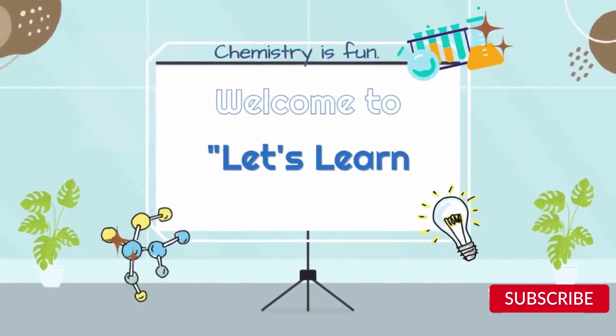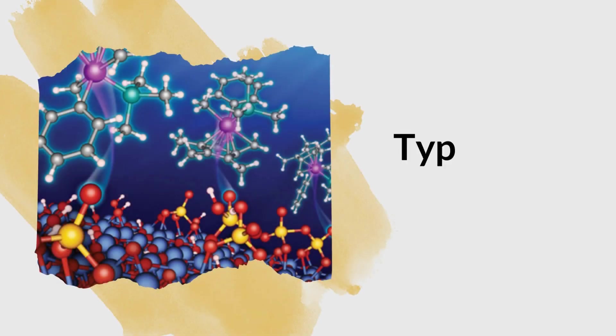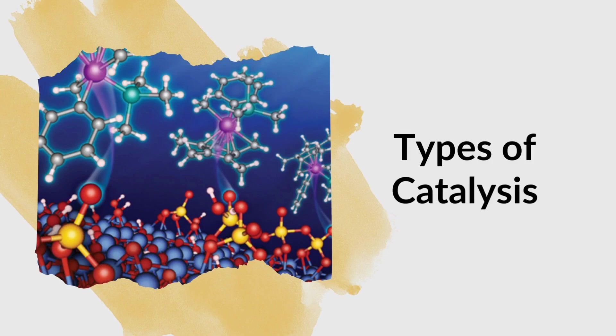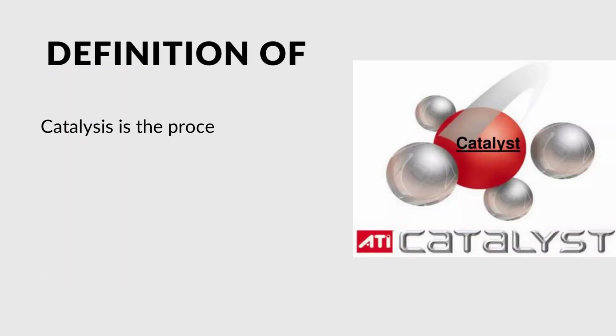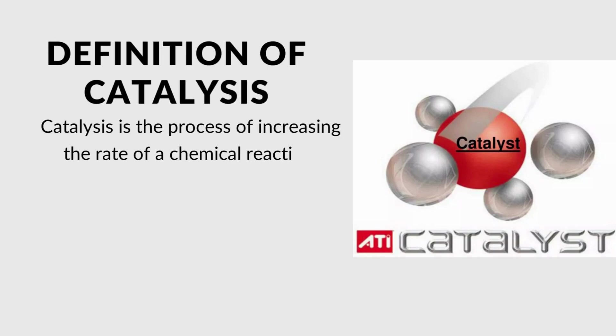Welcome to Let's Learn Chemistry. Today we will discuss types of catalysis in detail. First of all we see definition of catalysis. Catalysis is the process of increasing the rate of a chemical reaction. Catalysts are substances that speed up reactions without being consumed.